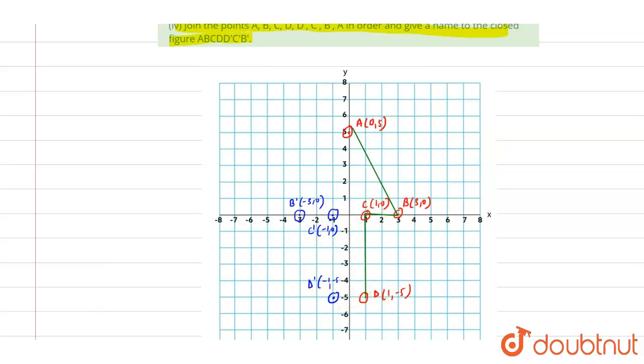Next from D to D', next again from D' to C', then from C' to B', and from B' to A and this is the required figure. So the figure is in the shape of an arrow. Hence we can say that A, B, C, D, D', C', B', A is an arrowhead.